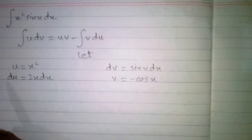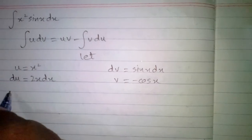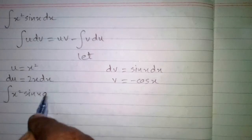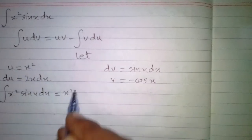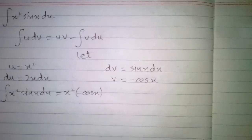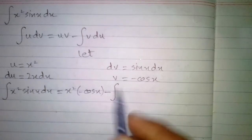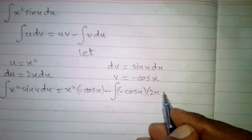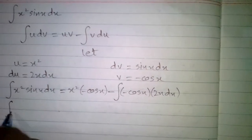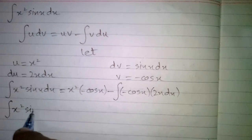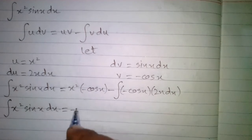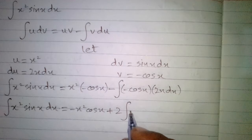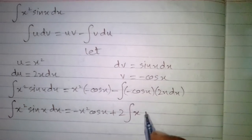Now we will put these values into the integration by parts formula. Substituting u as x squared and v as minus cos x, we get minus x squared cos x minus the integral of minus cos x times 2x dx. After simplification, the two comes in front of the integral, giving us minus x squared cos x plus 2 times the integral of x cos x dx.